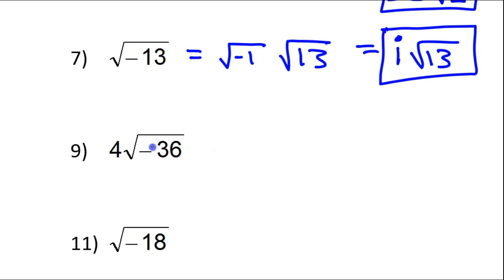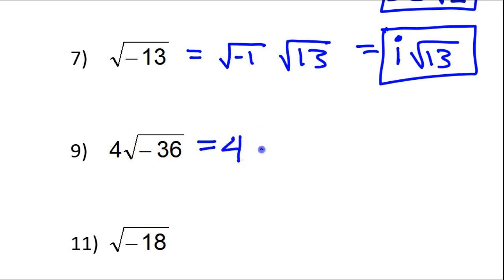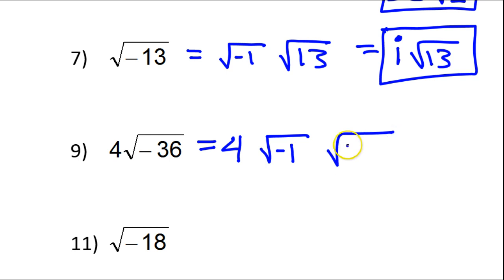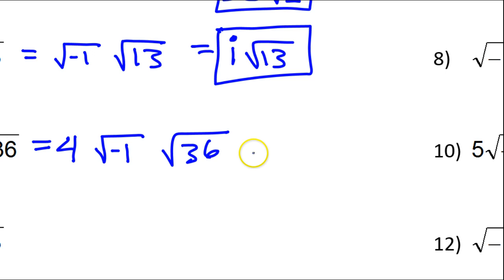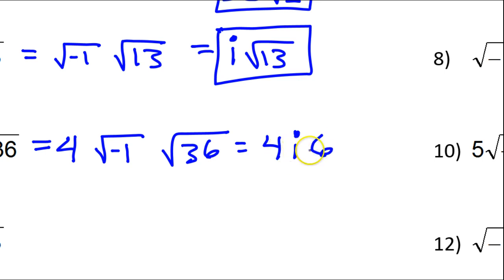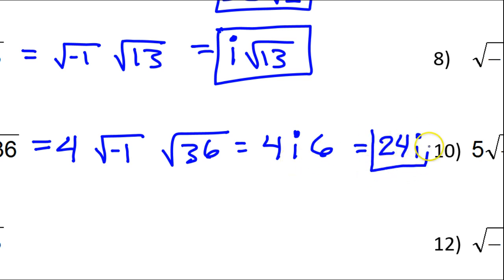Anytime you see a negative under the radical, you know you're going to have an i. I'm going to show a couple extra steps you wouldn't normally need. First of all, we've got the 4 — that's not going anywhere. That negative, you could look at it as negative 1, and then you've got the 36. So that would give you 4, then i. The square root of 36 is 6, so you have 4 times i times 6. But then 6 times 4 is 24 — don't forget the i. So your final answer here would be 24i.